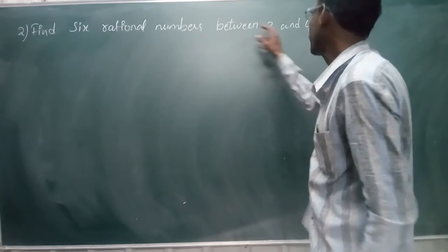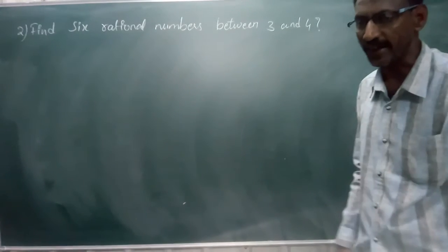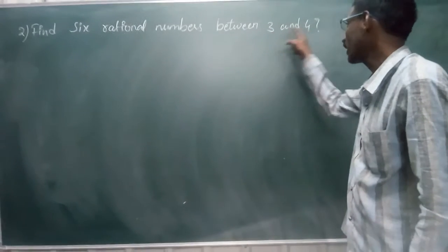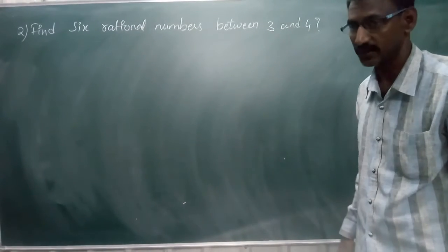Find 6 rational numbers between 3 and 4. We have to find 6 rational numbers between 3 and 4. How many rational numbers do you need? Six.